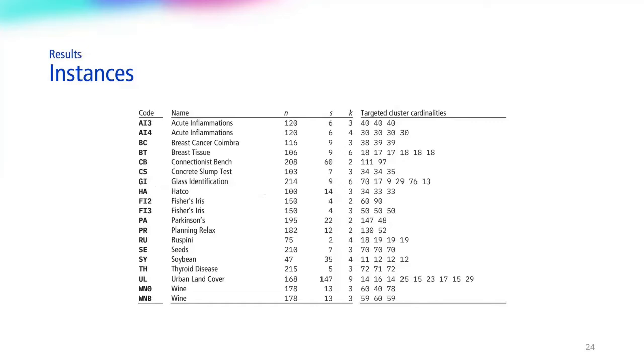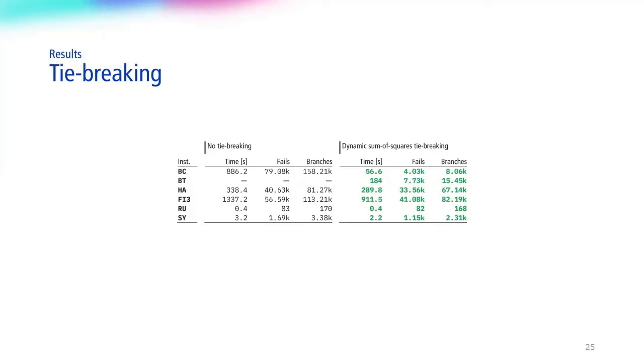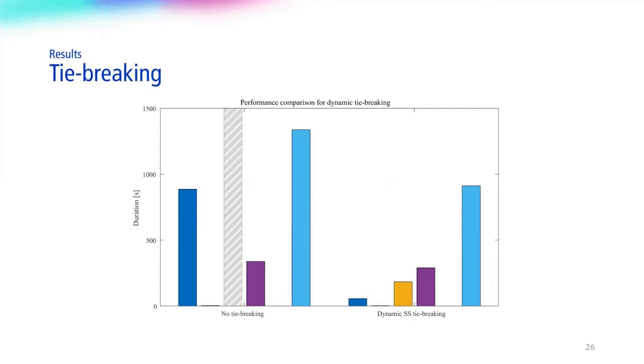We selected 19 instances widely used in the literature to evaluate our algorithms. We first start with the impact of the tie-breaking strategy we adopted. Using only Dow et al.'s algorithm on a representative subset of the instances selected, our enhanced search shows substantial gains. In particular, breast tissue is solved in 184 seconds, down from 24 hours plus. Somewhat more visually, we notice more easily here reduced times across the board.